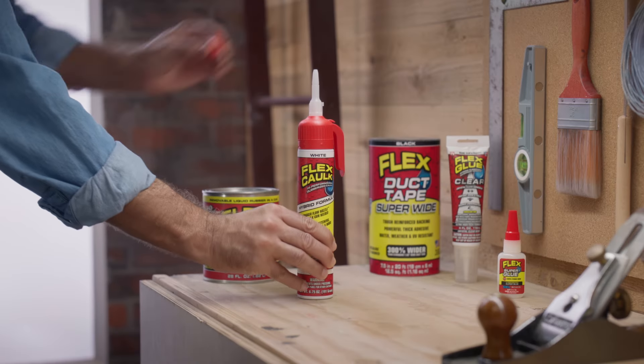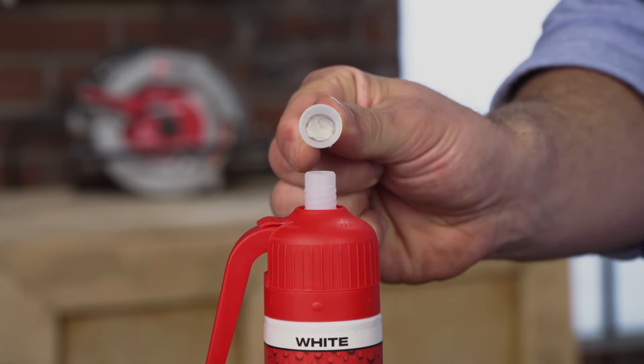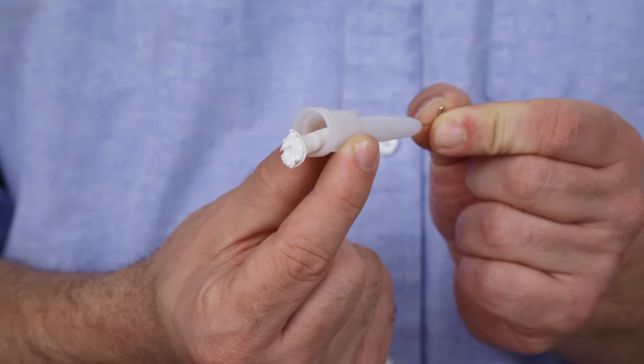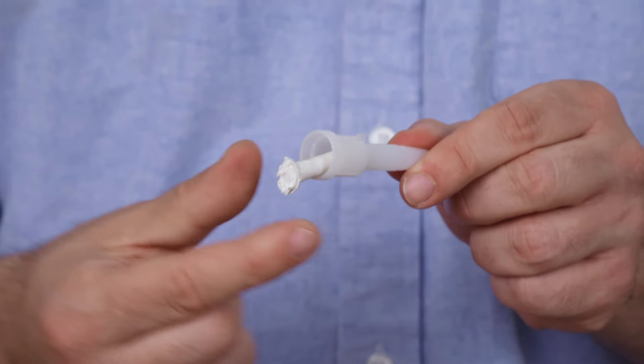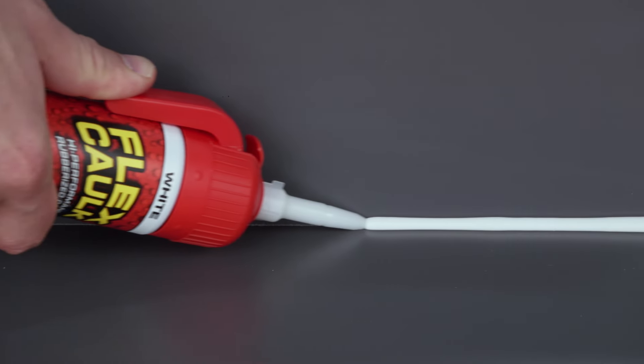Our Snap and Save cap will help keep your flex caulk fresh. However, if the caulk does dry out inside the white nozzle, you can always unscrew the nozzle, clean it out, and screw it back on. This will allow you to continue caulking.